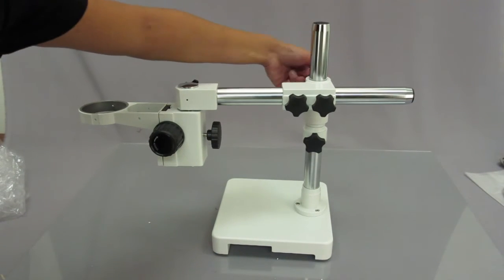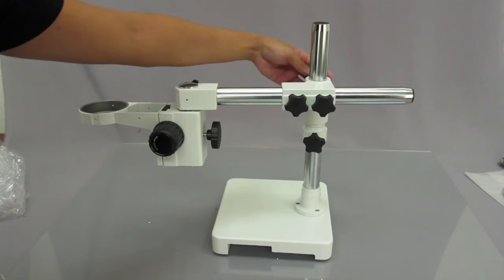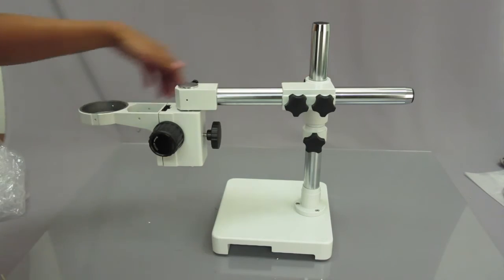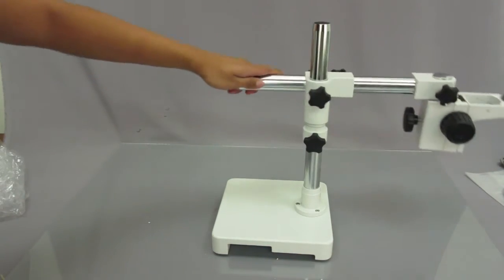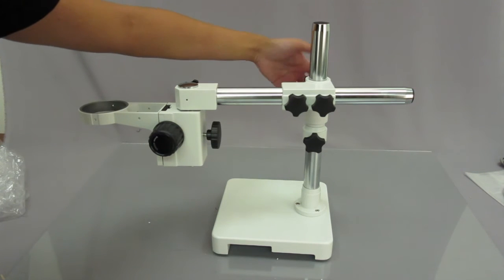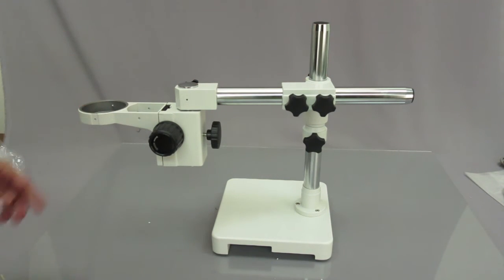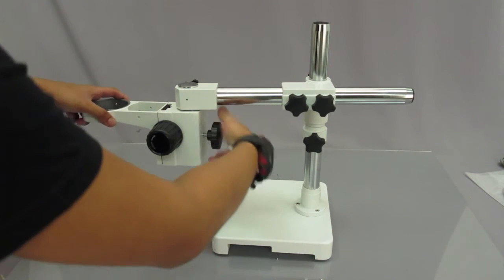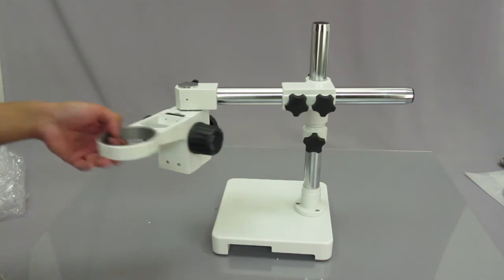Notice how with the stand I can rotate this a full 360 degrees. All you'd have to do is unscrew this knob in the back. And you could move it around as much as you want. Now if you want, you could also move the head. Just unscrew this part in the back. And you can move the head left and right.